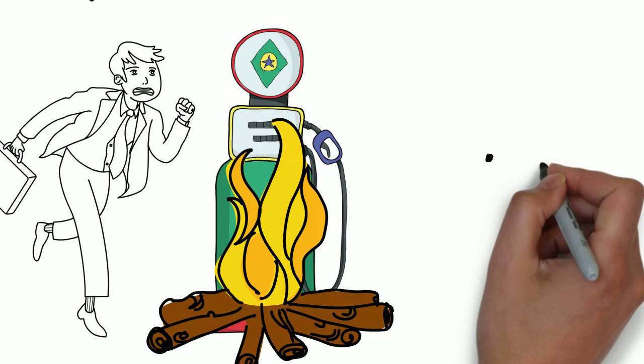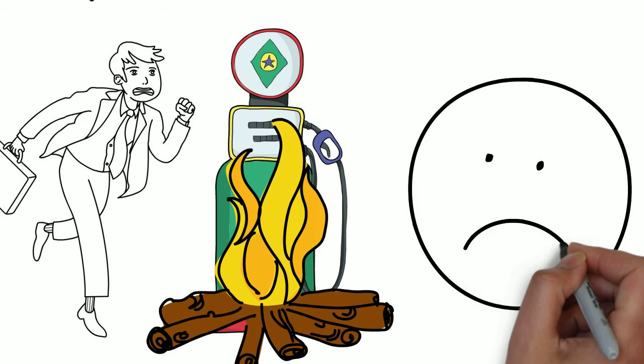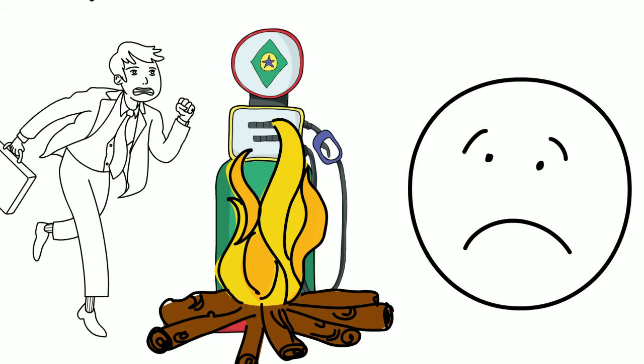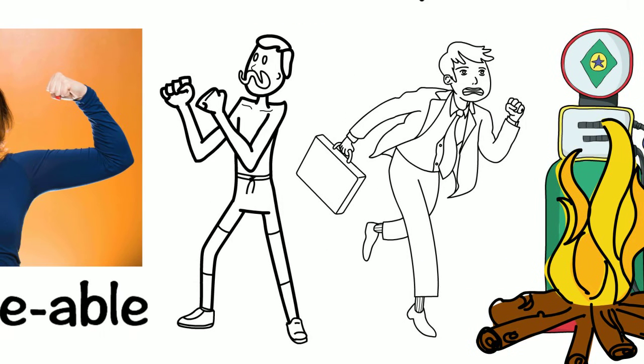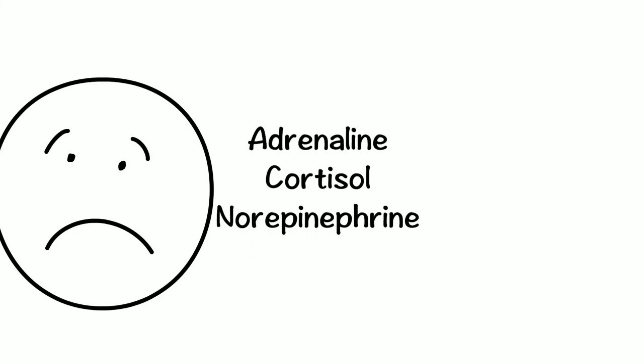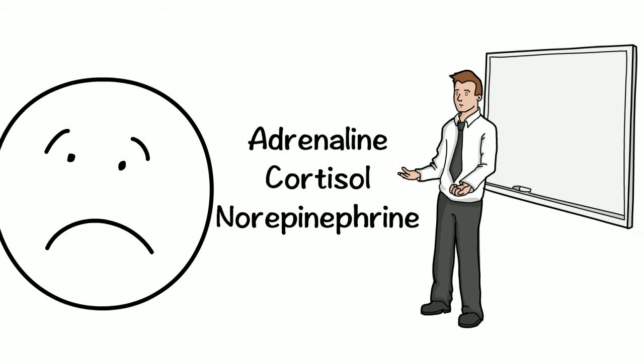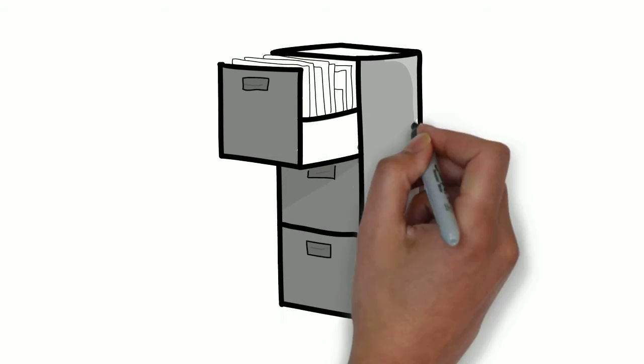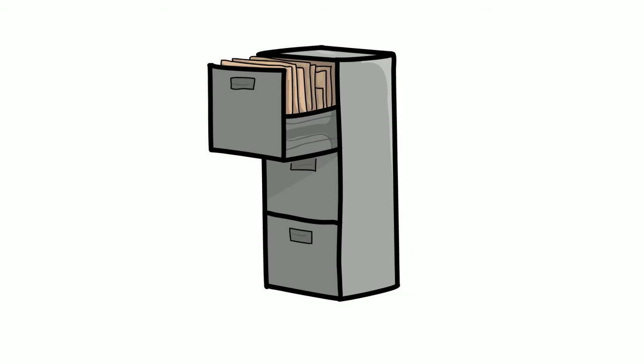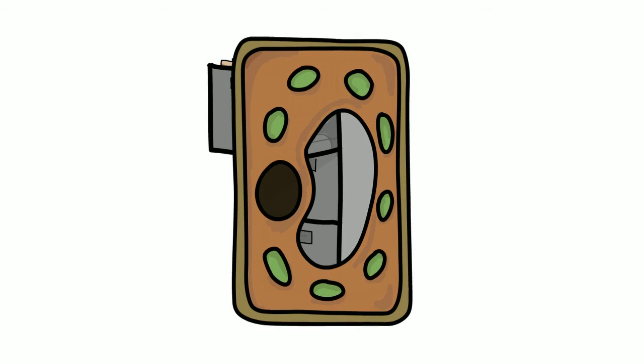But what if someone says or does something that hurts you emotionally and, for whatever reason, you are unable to fight or flee? Then what? The chemicals that are produced or deployed have no mission and are therefore forced to stand down. In other words, they get stored or deposited into your soft tissue waiting to be released.